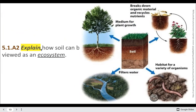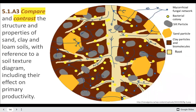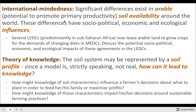For 'explain' questions, go a little more in depth than 'outline.' To explain how soil can be viewed as an ecosystem, remember that ecosystems include both living and non-living components — mentioning both is important. You may also need to compare and contrast the structure and properties of sand, clay, and loam soils; there are excellent tables in textbooks that break down all the differences.